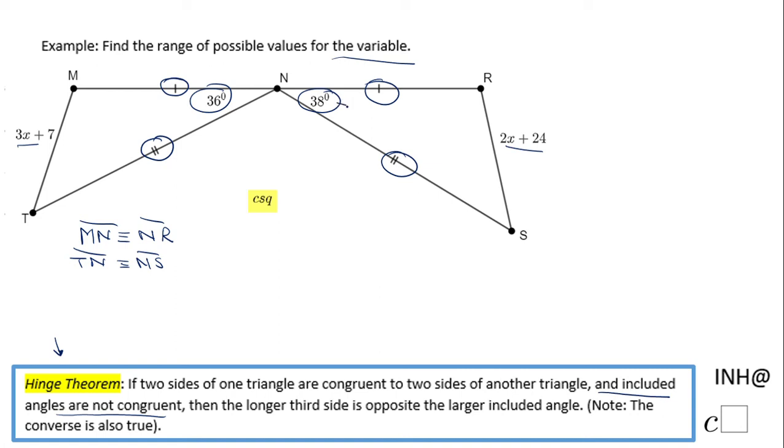So that means this side here, 2x plus 24, needs to be larger than this side because 38 is greater than 36.